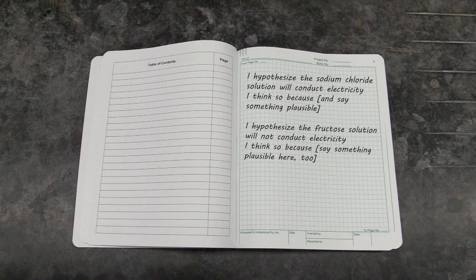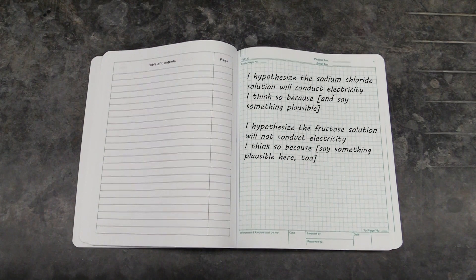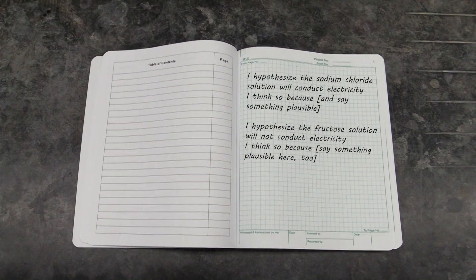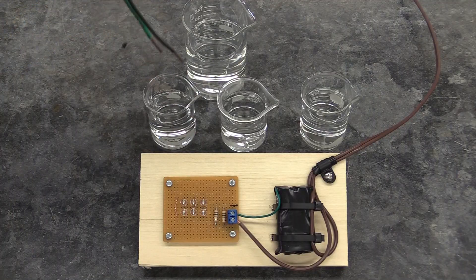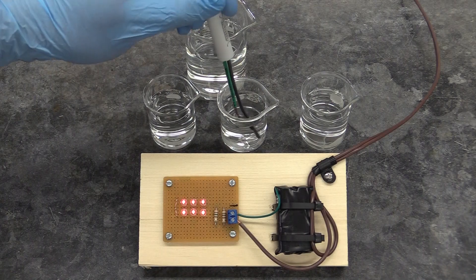Before you come to lab, you will need to hypothesize which of the solutions you'll be given should conduct electricity and which should not. As you're performing your tests, make sure to rinse the lamp's probe in DI water between solutions. If you don't, you'll contaminate them.